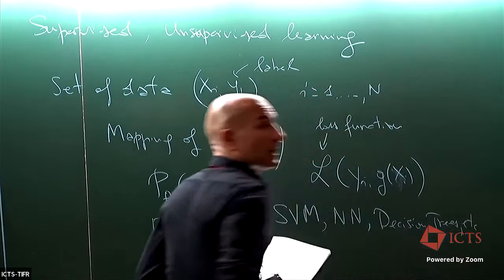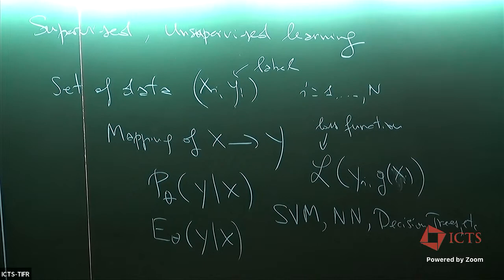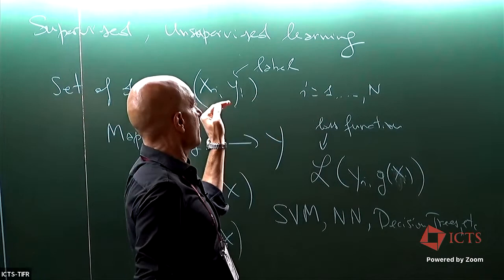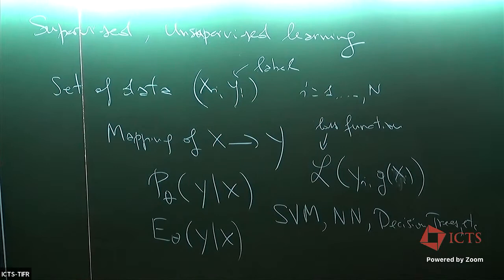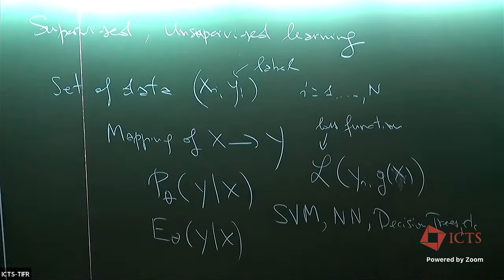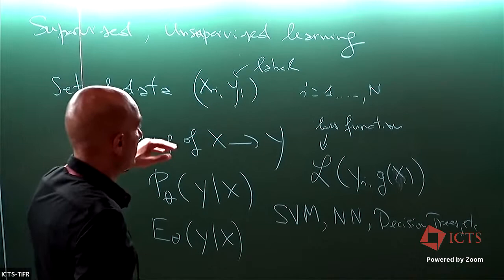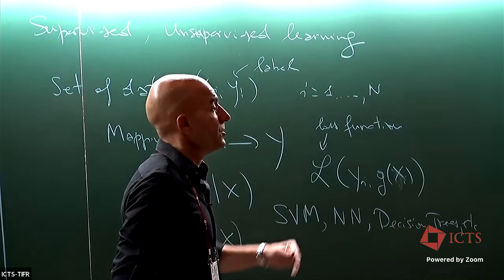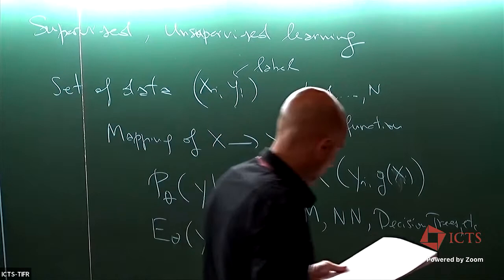The important point is that you're given a fixed bunch of N data points. You train your system on them and then apply to unknown data. I classify this as passive in the sense that you're given this data, you do what you have to do, and then apply your learned function onto new data.